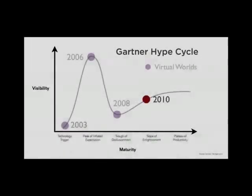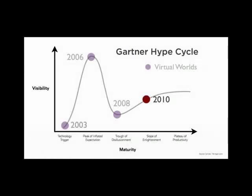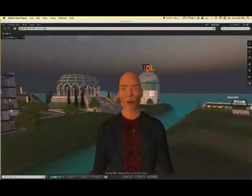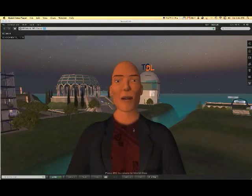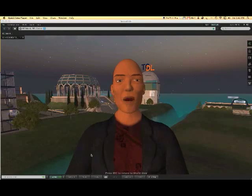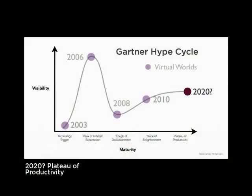Then follows the slope of enlightenment, when companies enter with lower expectations and a more conservative approach. At this stage many of the problems associated with the technology were addressed and enough knowledge is available to aid in decision making. Research indicates that using virtual worlds for niche applications like training and prototyping is already very effective, even though the technology is still in its infancy.